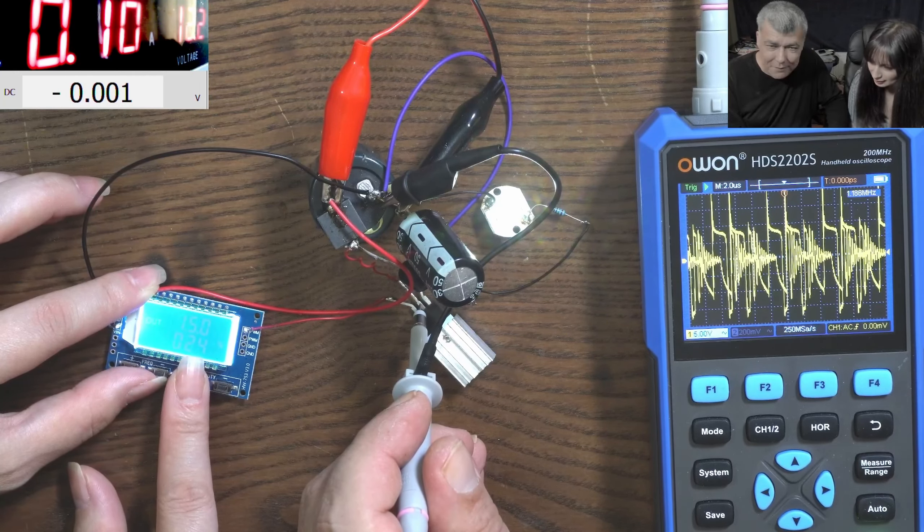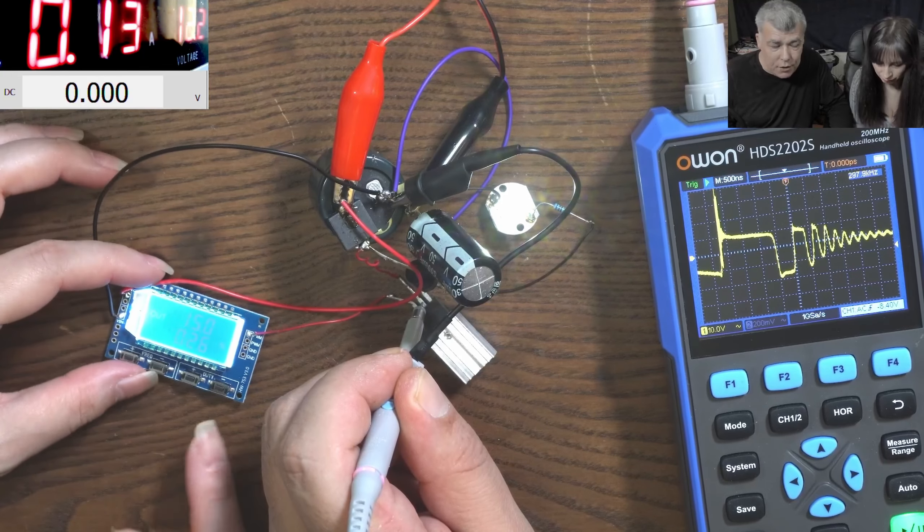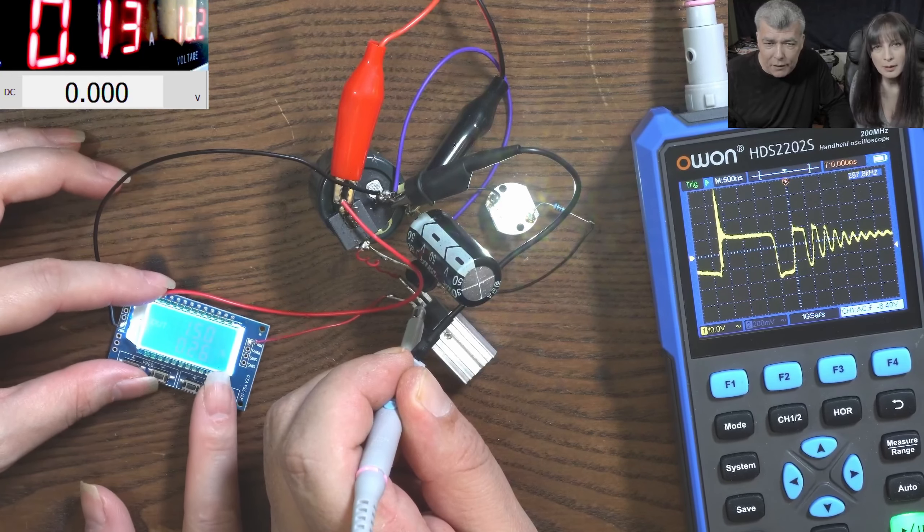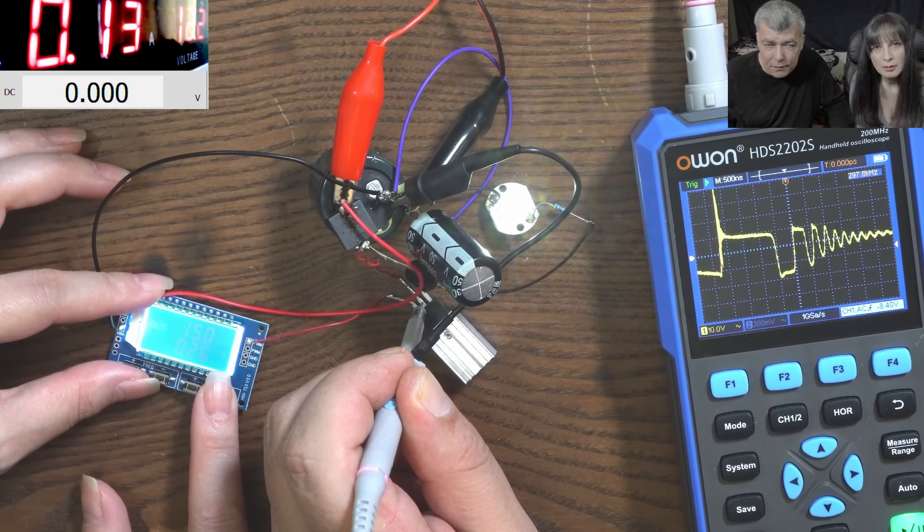So at 12% look at that, it's like your heartbeat. But you have to pay attention on the current because what you increase there is actually the current. And the current is on the screen. Go higher. You can see the amplitude is going up.